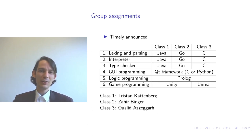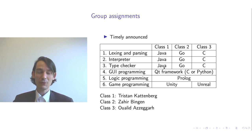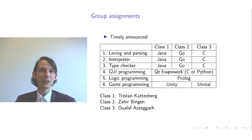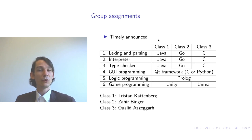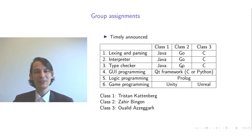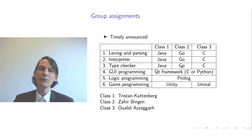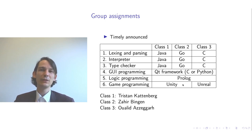In class one, the first three assignments are done in Java. The fourth assignment uses the QT framework — this is the same in all classes. The fifth is in Prolog and the sixth will be done in Unity. For class two, the first three assignments will be done using the Go language. The fourth and fifth are the same, and the sixth assignment will be done using Unity.